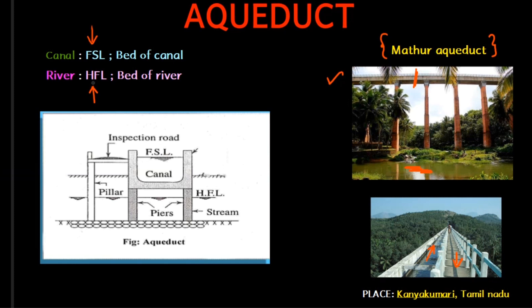The key levels are the Full Supply Level (FSL) and the High Flood Level (HFL). The bed of the river and the HFL are shown here. This is the river bank. As you can see, there is a canal bed, and the canal sits above the river. The HFL is below the bed of the canal above — this is an Aqueduct.